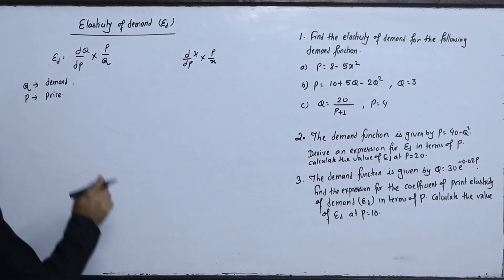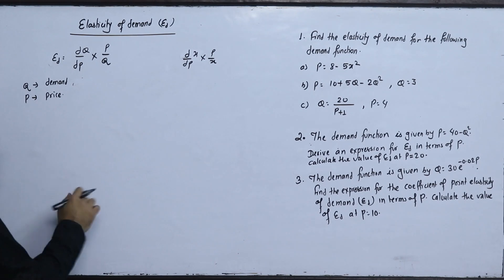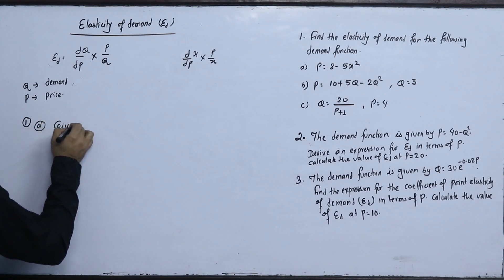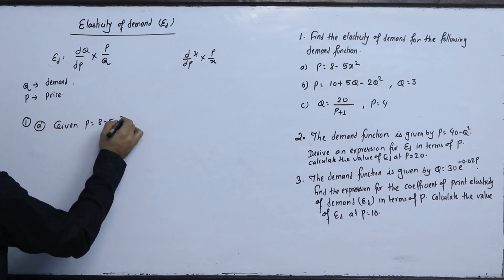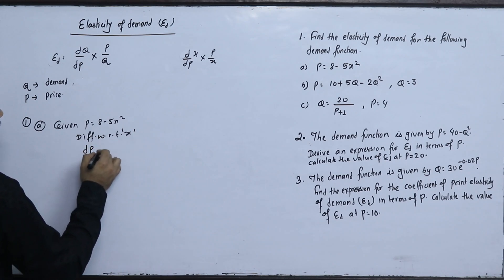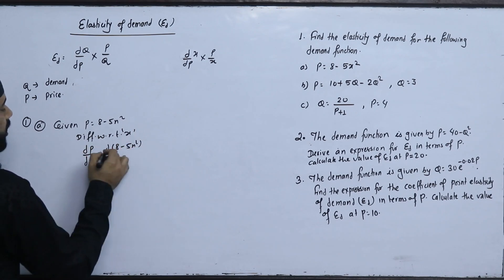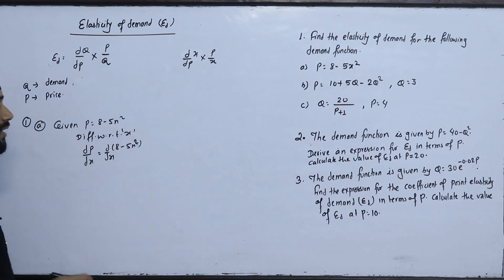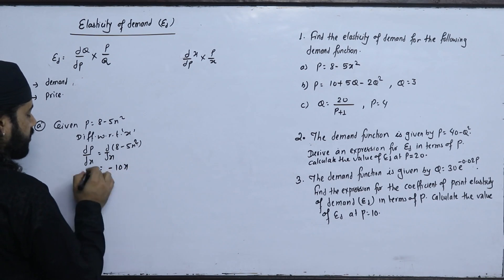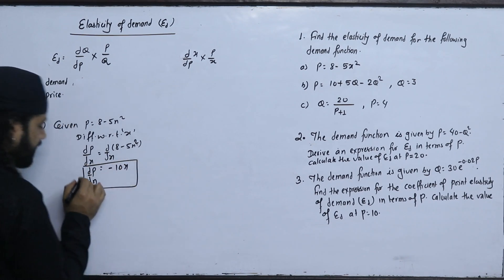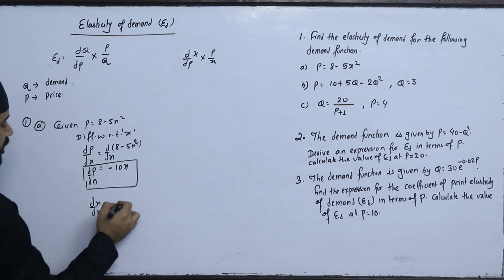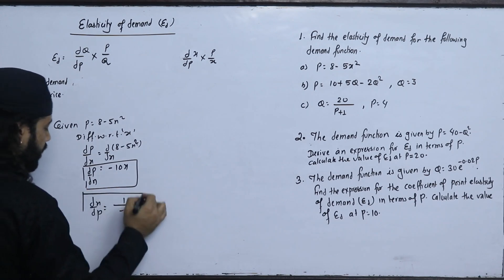In the first question, the demand function is p equals to 8 minus 5x squared. Differentiating with respect to x: dp/dx equals d(8 minus 5x squared)/dx, which gives dp/dx equals minus 10x. Therefore dx/dp equals 1 upon minus 10x.